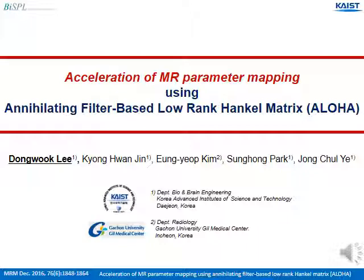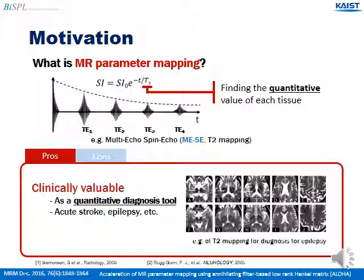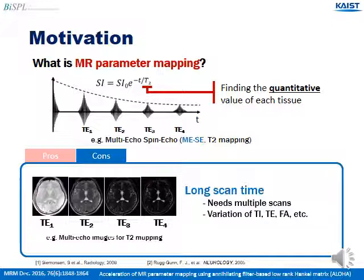MR parameter mapping is finding the quantitative values of each tissue, such as T1, T2, etc. It is clinically valuable as a quantitative diagnosis tool, but it takes long scan time due to the need for multiple scans with the variation of inversion time, echo time, flip angle, etc.